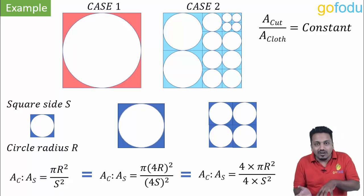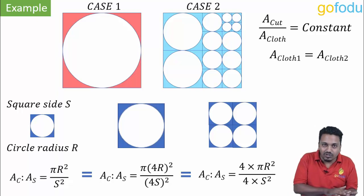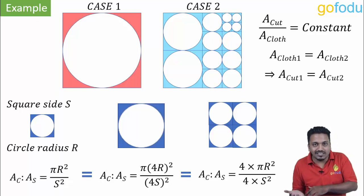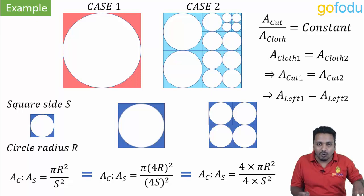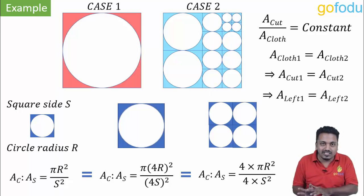Also, area of whole cloth is same in both cases. We took cloth of same size in both cases. So area of cut will also be same in both cases. And therefore the area of remaining cloth will also be same in both cases. As the cut part is same in both cases, the remaining part will also be same.